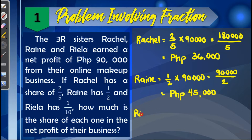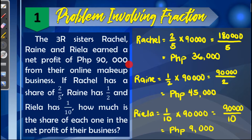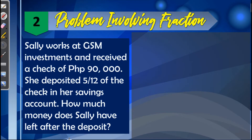For Riela, she will get one-tenth of 90,000, which gives us 90,000 over 10, equivalent to 9,000. So Racial gets 36,000, Rain gets 45,000, and Riela gets 9,000. To check, we simply add the three values: 36,000 + 45,000 + 9,000 = 90,000, confirming our answers are correct.